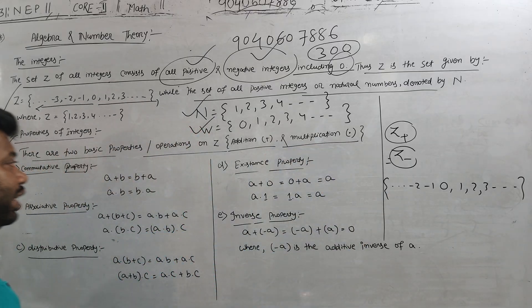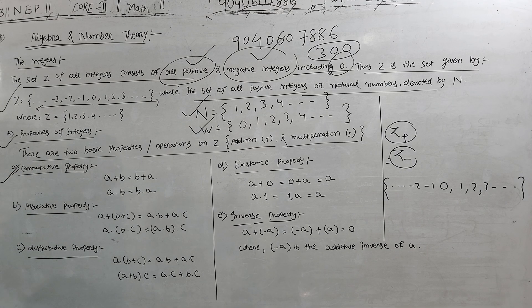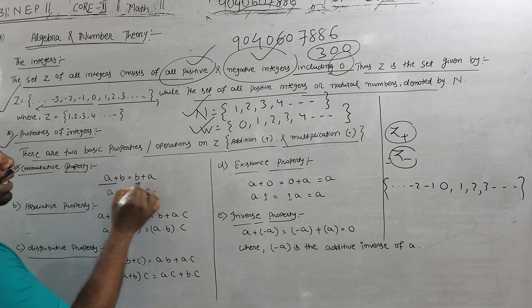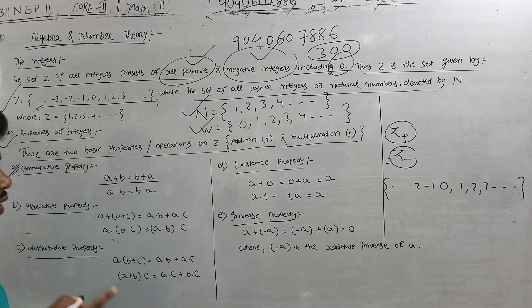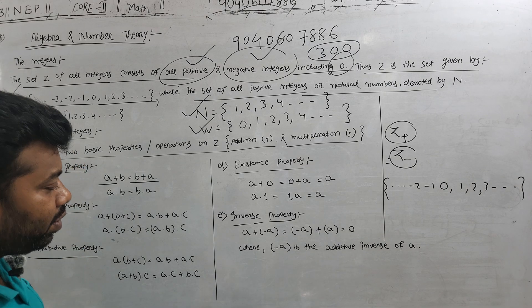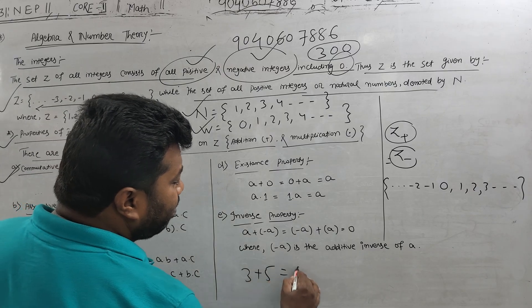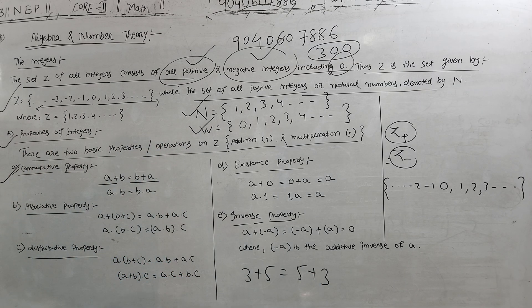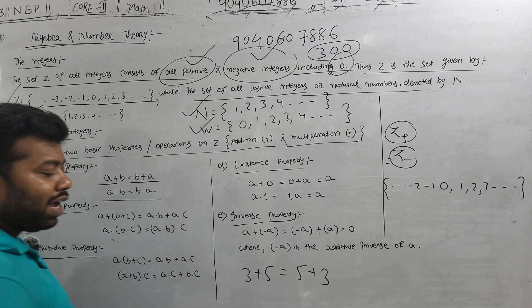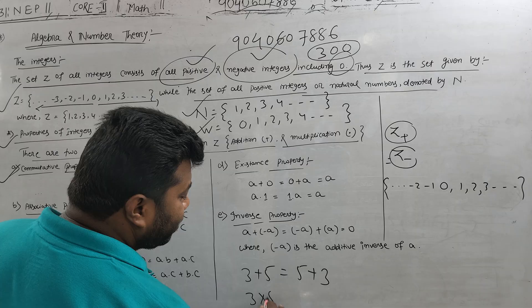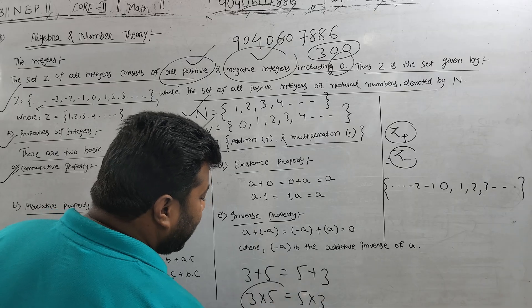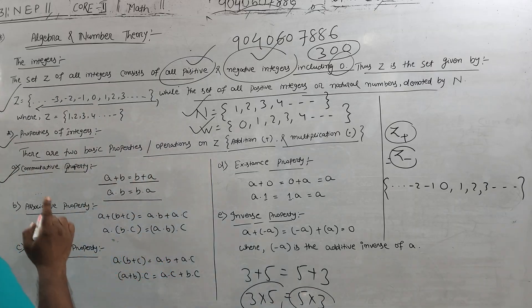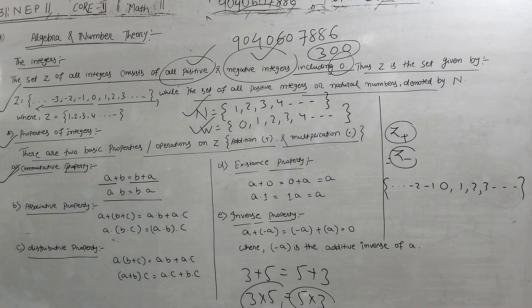The first property is commutative property. So commutative property: a plus b equals b plus a. The same thing: a into b equals b into a, like 3 into 5 equals 5 into 3. So if the integer can satisfy the commutative property, then the first property is commutative property.